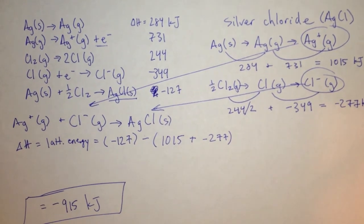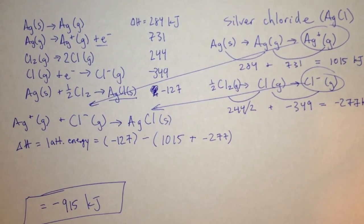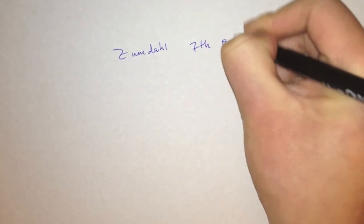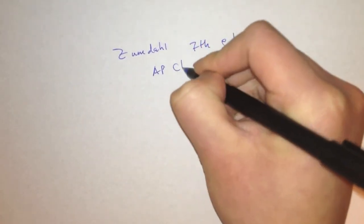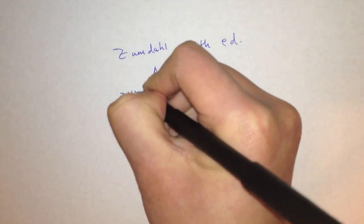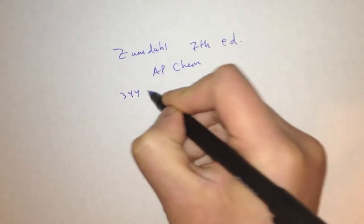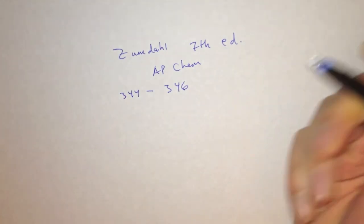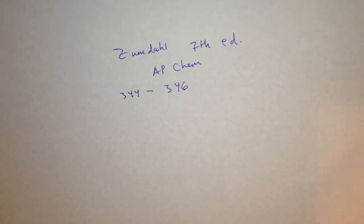I hope you've learned a lot by watching this video. If you feel like you haven't learned enough, you can go over this again in the Zumdahl 7th Edition AP Chemistry book, beginning on page 344 and ending on about page 346. This is part of the Bonding General Concepts chapter, which is chapter 8.